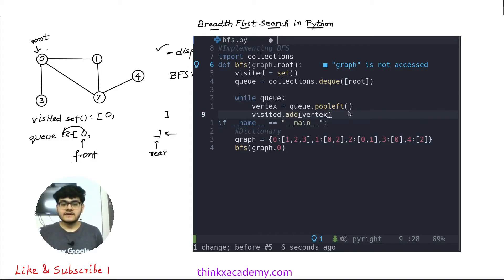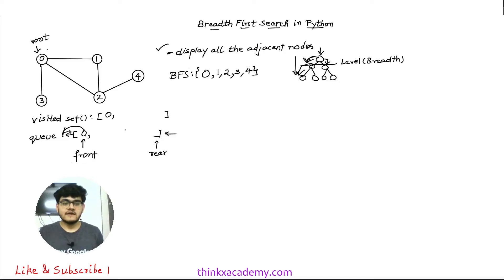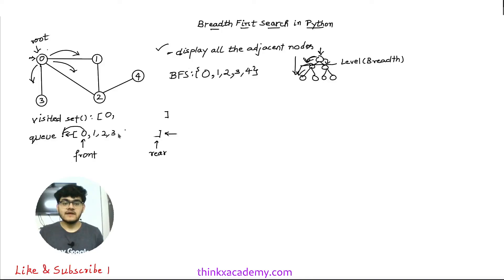Once we have dequeued an element, we are visiting that node. So we need to find all adjacent nodes at that vertex. For example, 1, 2 and 3 are the adjacent nodes of 0, and we push all of them into the queue. One important condition: whenever we enqueue adjacent nodes, we must make sure they are not already in the visited array. So we push 1, 2 and 3 since they are not yet visited.